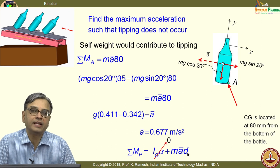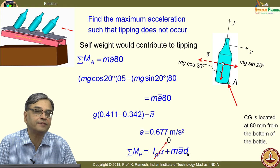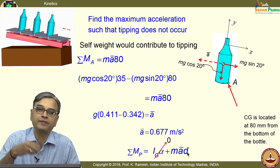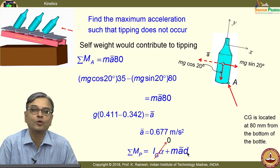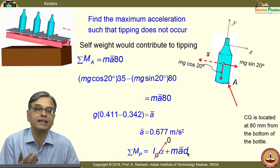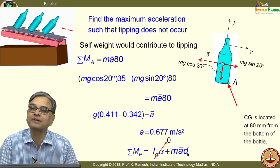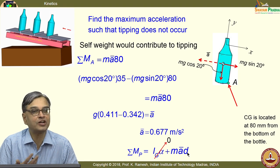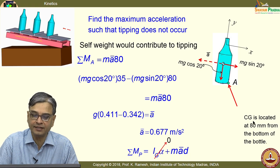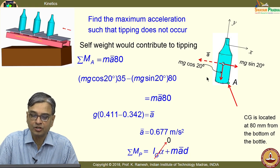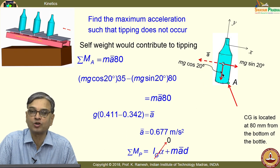It is a very nice, practical problem from the packaging industry — when they want to fill liquid bottles and increase productivity, you have to apply mechanics and find out what is the maximum acceleration the system can tolerate. Otherwise, the functionality would be lost. It also brings in your understanding of how to analyse whether tipping will take place or not.